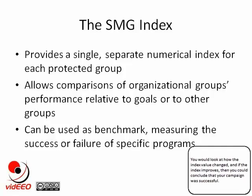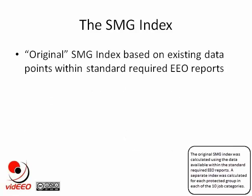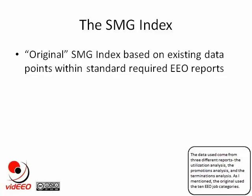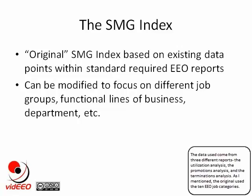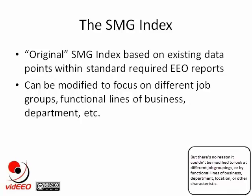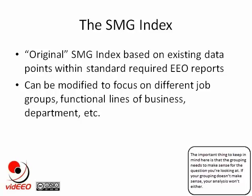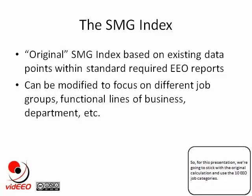The original SMG Index was calculated using data available within the standard required EEO reports. A separate index was calculated for each protected group in each of the ten job categories. The data used come from three different reports: the utilization analysis, the promotions analysis, and the terminations analysis. The original used the ten EEO job categories, but there's no reason it couldn't be modified to look at different job groupings, functional lines of business, department, location, or other characteristics. The important thing is that the grouping needs to make sense for the question you're looking at. For this presentation, we're going to stick with the original calculation and use the ten EEO job categories.